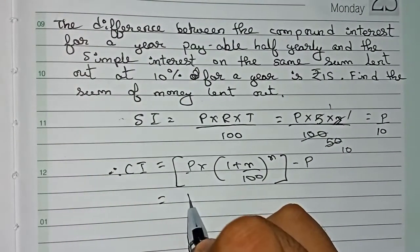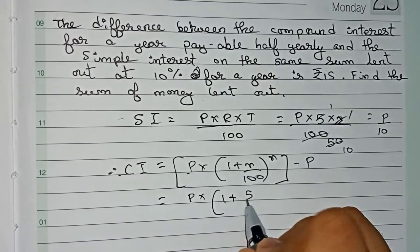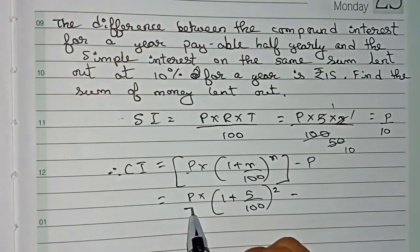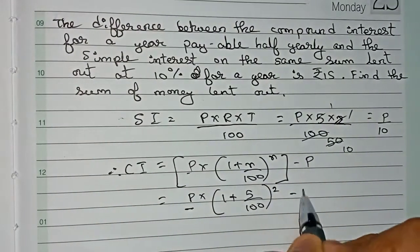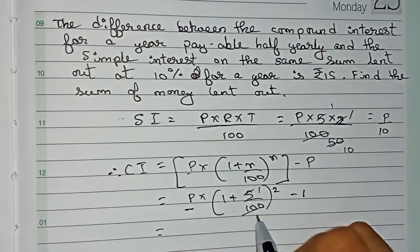Now we put down the values. Principle is unknown, so P × (1 + 5/100)^2 minus P. We take this principle as common, so it becomes minus 1 here. 5 and 100 we simplify, it becomes 1/20.